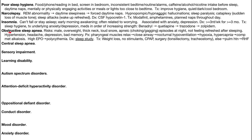Next is obstructive sleep apnea, mostly a structural problem. Risk factors include being male, overweight, having a thick neck, snoring loudly, and having apneic episodes at night — some people's partners notice them choking or gagging. Not feeling refreshed after sleeping is another sign. While awake, patients may be hypertensive, have headaches, depression, or bad memory. The pathophysiology is that pharyngeal muscles relax and close the airway, leading to hypoventilation, hypoxia, and hypercapnia. The body responds with compensatory metabolic alkalosis, and you may also see polycythemia as the kidneys increase EPO production due to low oxygen.